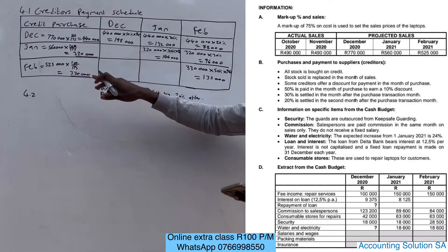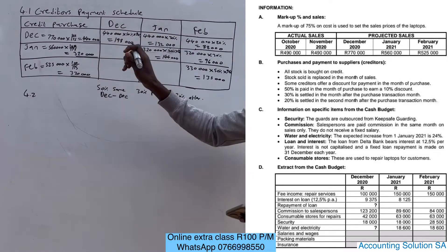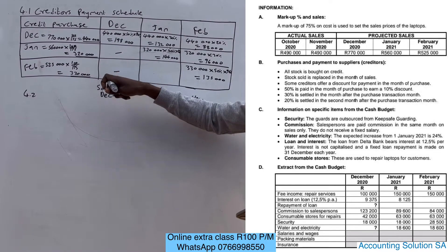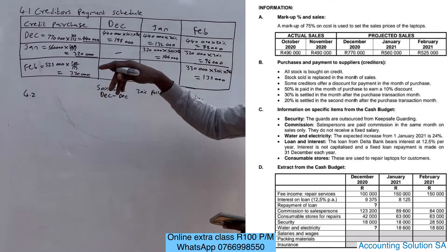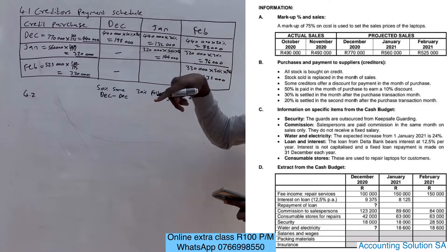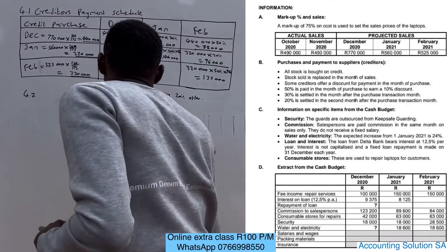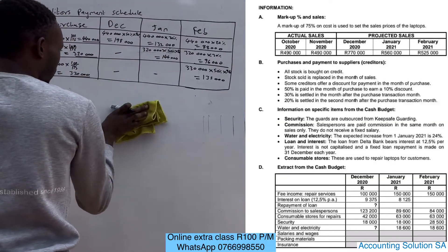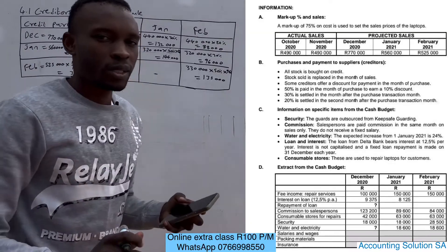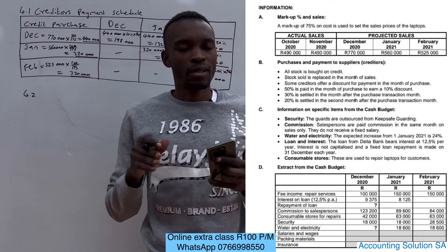That is how we deal with the creditors payment schedule. December is a previous month so there is nothing showing in that column from January's 20 percent. February is already the following year so December's entry is complete. January is the previous month so there is nothing showing in that column from the 20 percent row either. That is how we compile a creditors payment schedule — very simple and straightforward.